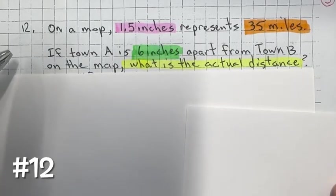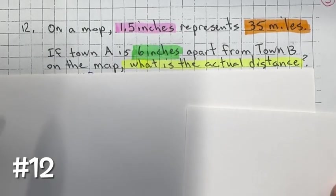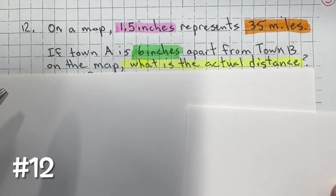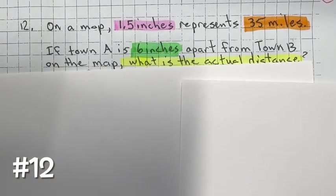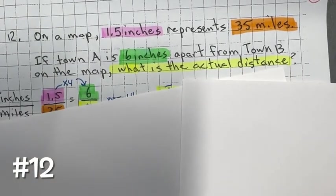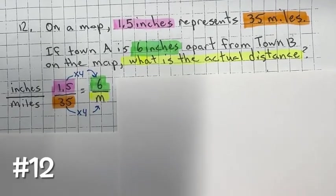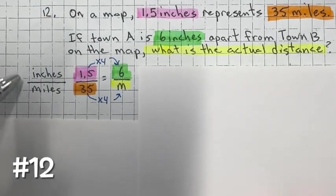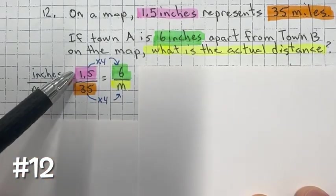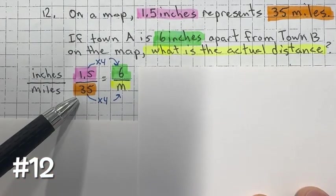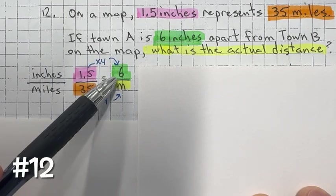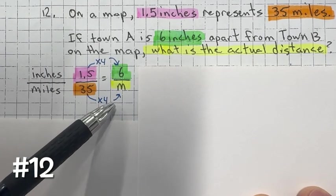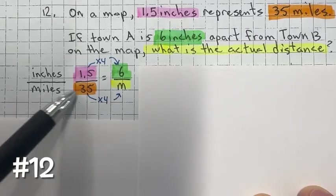For problem 12, on a map, one and a half inches represents 35 miles. If town A is six inches apart from town B on the map, what is the actual distance? This is a proportional relationship comparing inches to miles. On the map you have one and a half inches for 35 miles, and town A is six inches from town B.